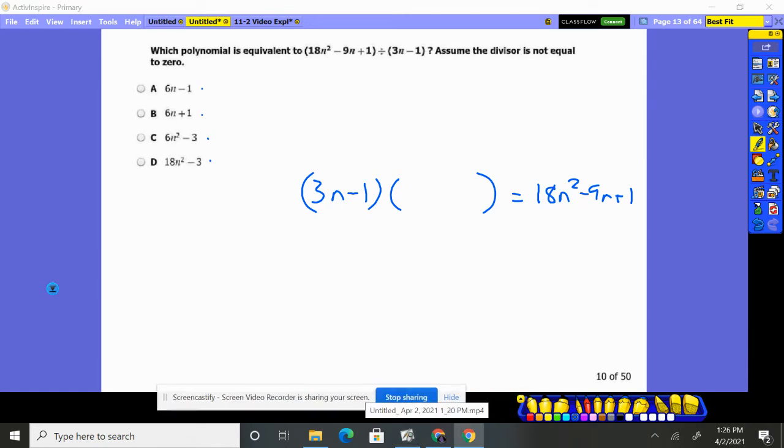So what we're going to do is we're going to say this piece times this piece has to give me 18n squared. What would that be? 3 times 6 and n times an n would give me the 18n squared. A negative 1 times what's going to give you a positive 1? A minus 1.